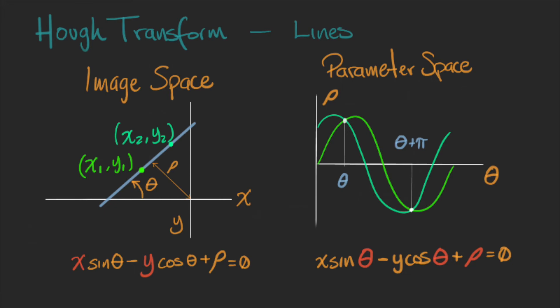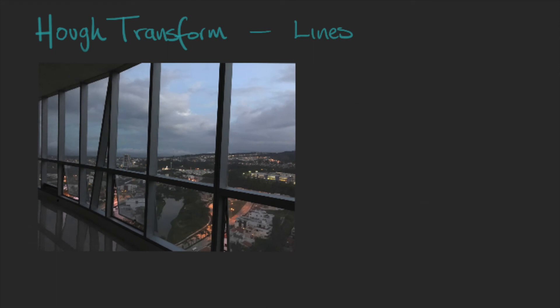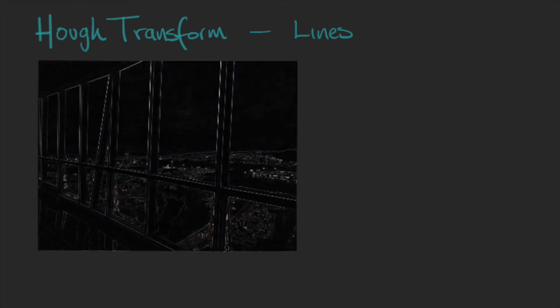Let's see an example. We have an image and we apply an edge detector. Then we binarize it and we apply the Hough transform.